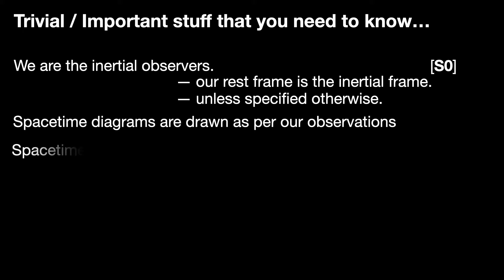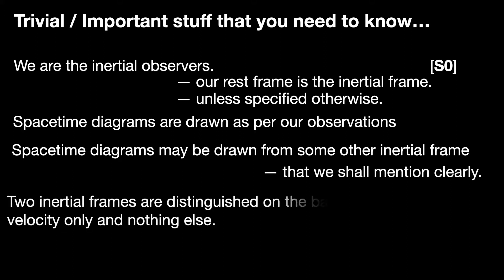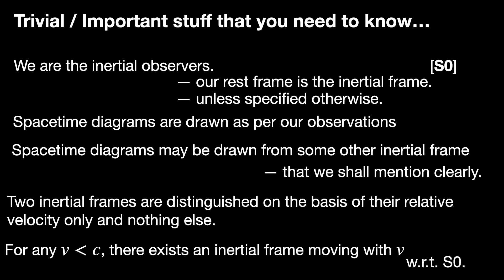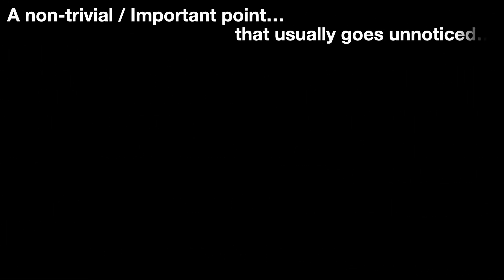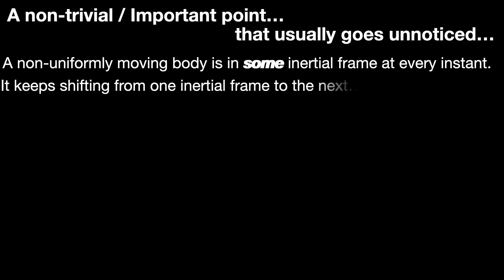Sometimes it may be necessary to consider how a situation appears to an observer in a frame — inertial or non-inertial — different from ours, and whenever we do such a thing, we shall point it out very clearly. Also notice that two inertial frames are distinguished only on the basis of their relative velocities, and for any velocity allowed by the second postulate of special relativity — that is, velocity less than the speed of light — we have an inertial frame moving with that velocity. Now the non-trivial one: even a non-uniformly moving body — accelerating, decelerating, or even dancing — is in some inertial frame or other if we choose to look at it instant by instant. It doesn't stay put in one particular inertial frame, but at each instant it is in some inertial frame, and the very next instant it changes to a different inertial frame with a different velocity.